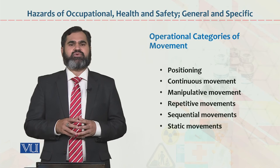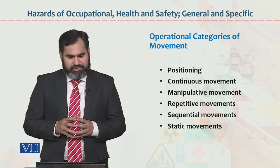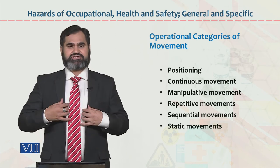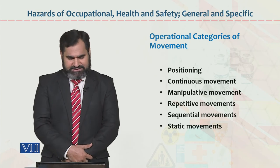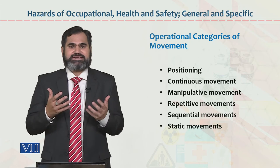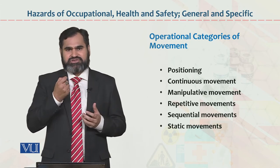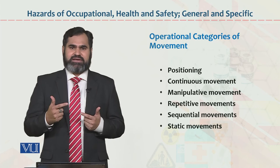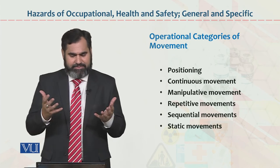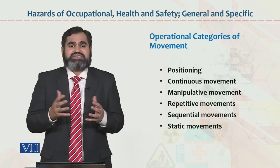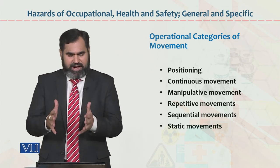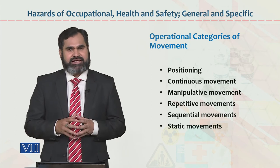Operational categories of movement — ye last components hain. In mein kya cheezein hain: pehle number pe positioning — main aap ke saamne khara hoon, ye meri positioning hai. Second: continuous movement — main continuous basis pe bol raha hoon, ye continuous movement hai meri lungs ki, meri tongue ki. Phir manipulative movement, phir repetitive movements, phir sequential movement — ek cheez ke baad doosri ki movements. Or last: static movement. Ye tamam cheezein operational categories of movements hain.